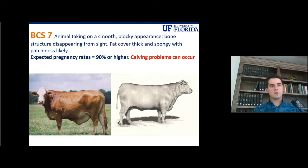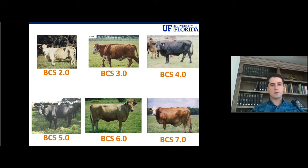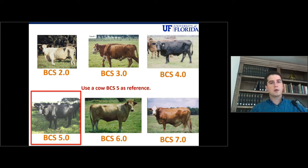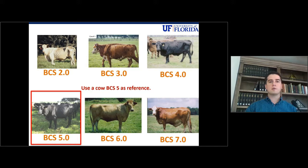As a summary, those are the six most common body condition scores you will see in a commercial cow calf operation. One strategy we recommend is to use a cow at body condition score 5 as a reference and keep the image of that cow in your mind. Then try to memorize at least two characteristics for each body condition score, and use that to move up or down the scale.